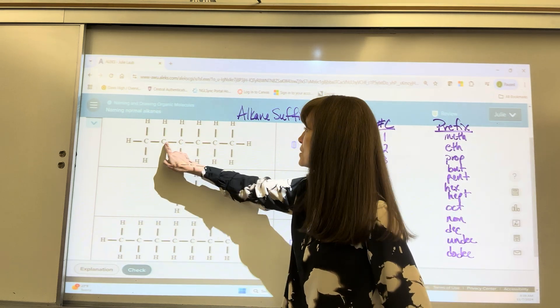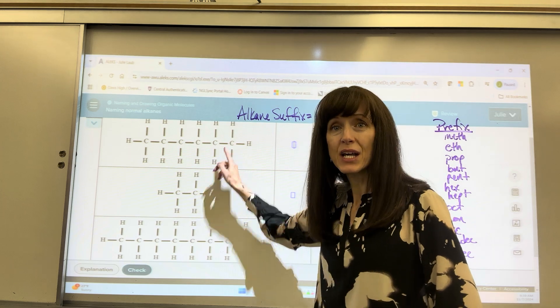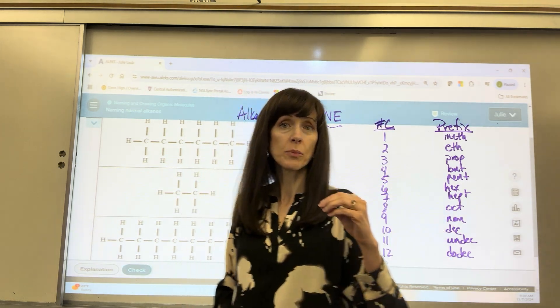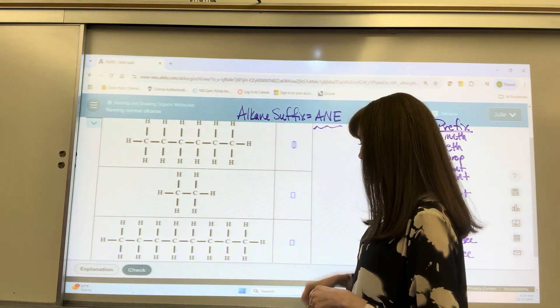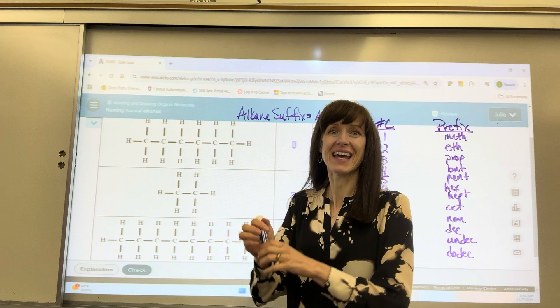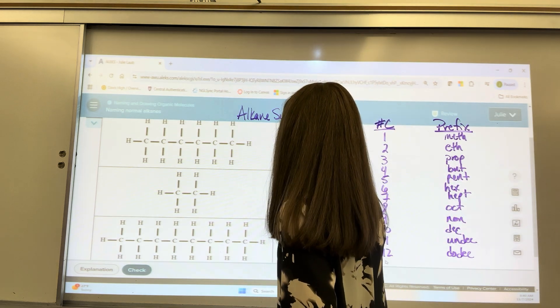1, 2, 3, 4, 5, 6. My prefix for 6 is hex. They're all single bonded carbons. The ending is A-N-E, and so our answer, put it together, hexane. Hexane. That's it.